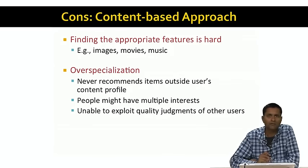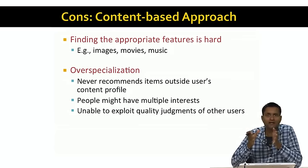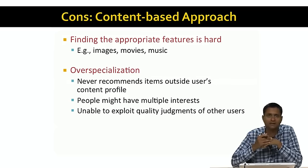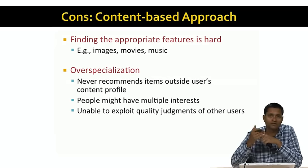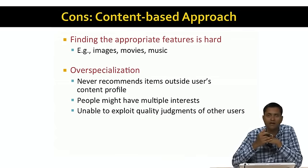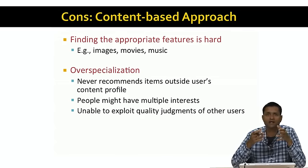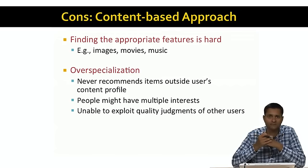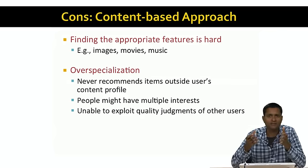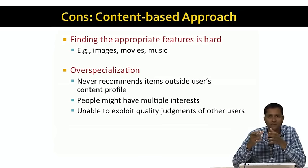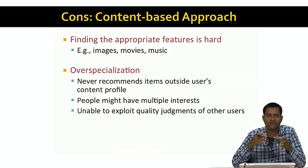The second problem is one of over-specialization. The user profile is built using item profiles of items the user has rated or purchased. If a user has never rated a certain genre of movie, they will never be recommended a movie in that genre, or a piece of music outside their previous preferences. People might have multiple interests and express only some of them, so it's easy to miss recommending interesting items because you don't have enough data on the user.